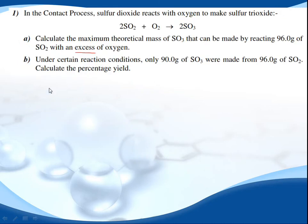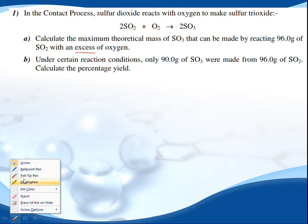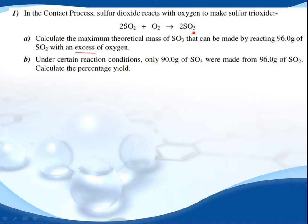Let's look at an example. We have SO2 plus oxygen to make SO3. We're going to calculate the maximum theoretical mass of SO3 that can be made by reacting 96.0 grams of SO2 with excess oxygen. The excess oxygen tells us that SO2 is the limiting reactant.